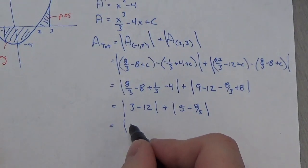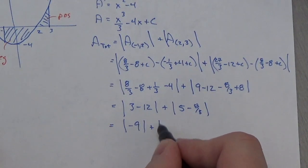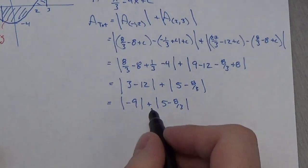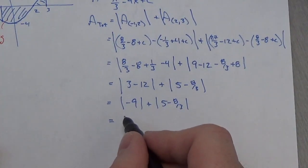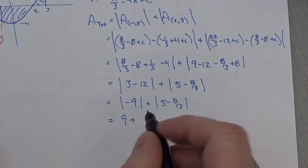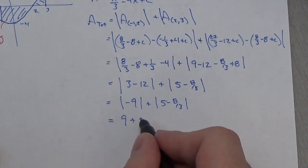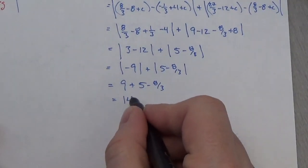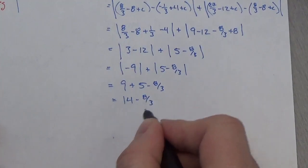So, 3 minus 12 is going to be negative 9, plus 5, minus 8 thirds. Okay, well, the absolute value of 9 is going to be, negative 9 is going to be 9, and I know that this is going to be a positive answer, so I can just drop the absolute values. So, this is what I've got, so 9 plus 5 is going to be 14, minus 8 thirds,